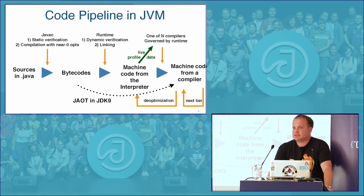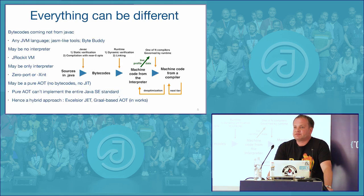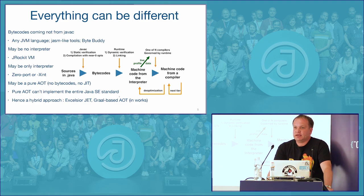Almost everything can be different in this picture. First, javac is not the only compiler — there are something like 80 VM languages that all produce bytecodes, plus bytecode transformation utilities and bytecode generators. The VM has to be agnostic and only needs to acknowledge the JVM specification, not any assumption that this was generated by a particular compiler.